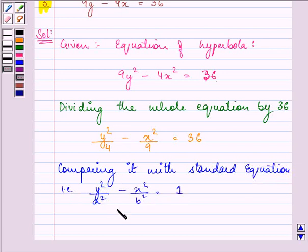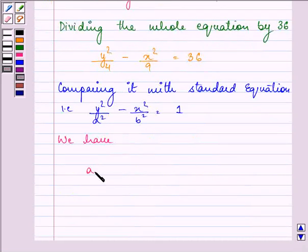So, on comparing these two equations, we have a² = 4, that means a = ±2, and b² = 9, that means the value of b is ±3.